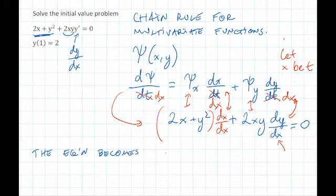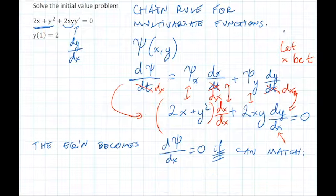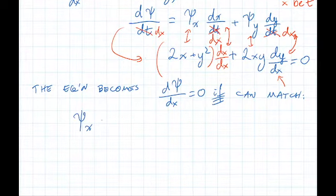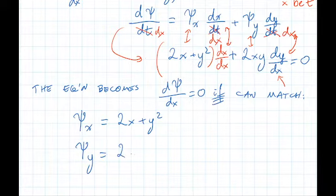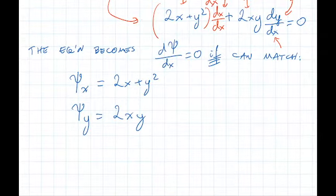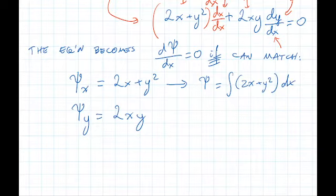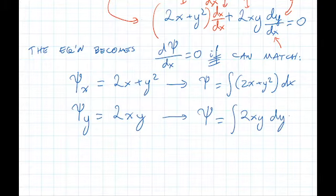The equation becomes, if we can have matching, if we can match psi sub x the partial derivative is equal to 2x plus y squared, and psi sub y is equal to 2xy. Well let's see, can we find psi? Well from the first part here it says that psi is equal to the integral of 2x plus y squared dx. And from the second one it says that psi is equal to integral of 2xy dy.